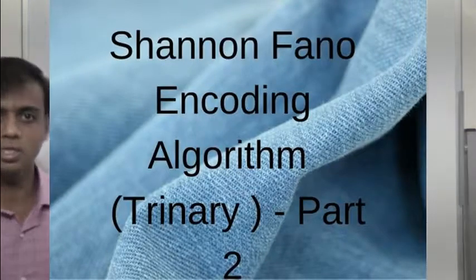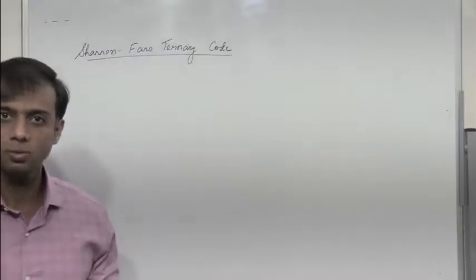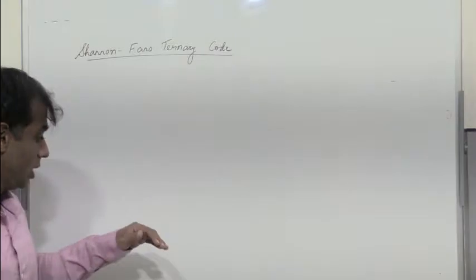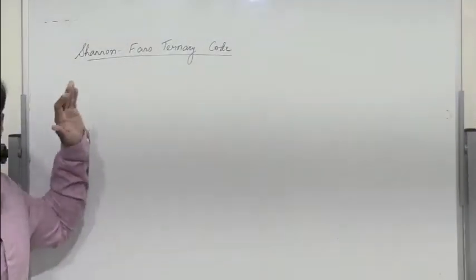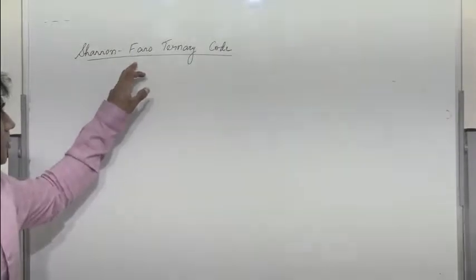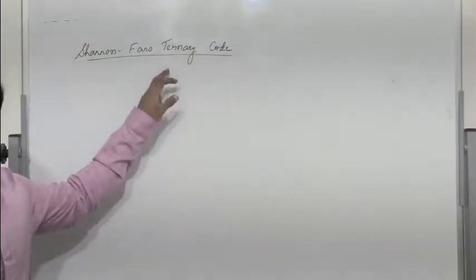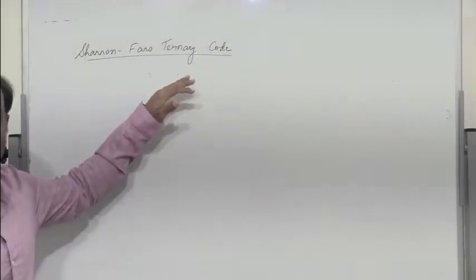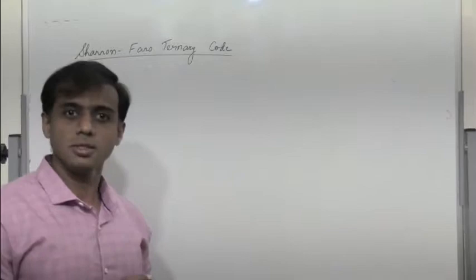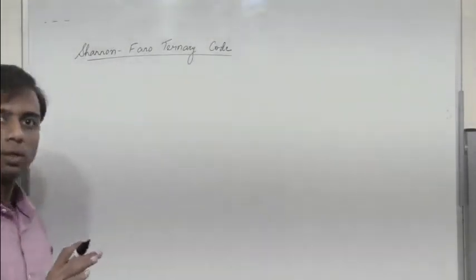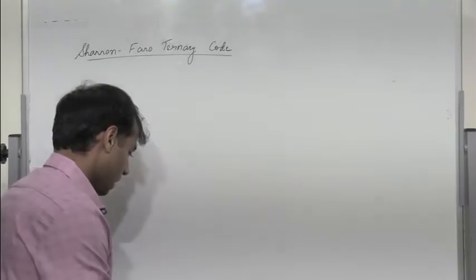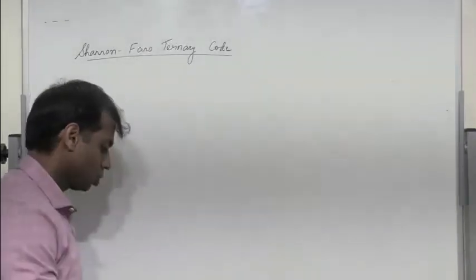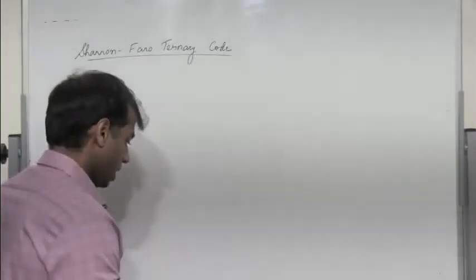In the previous session, we went through the Shannon-Fano encoding algorithm for binary code. Now in this segment, we consider the Shannon-Fano encoding algorithm for ternary code. The procedure remains the same with slight modification. Let us consider a problem and see how to perform Shannon-Fano ternary encoding — the steps are very similar.